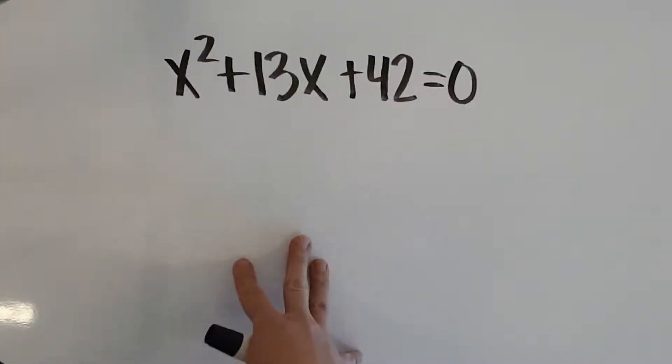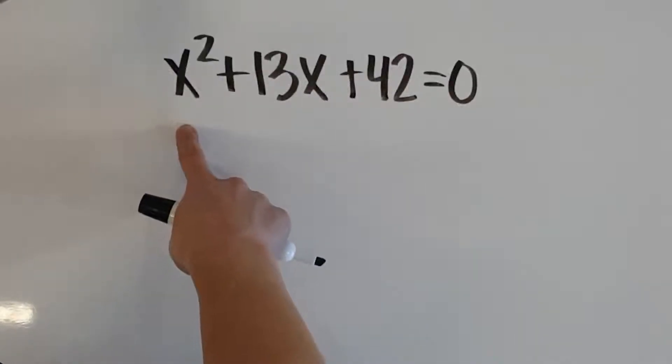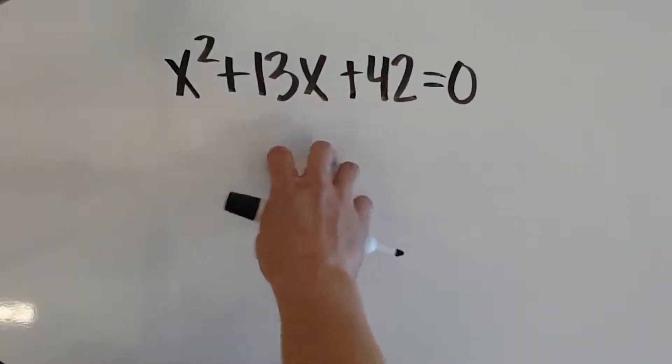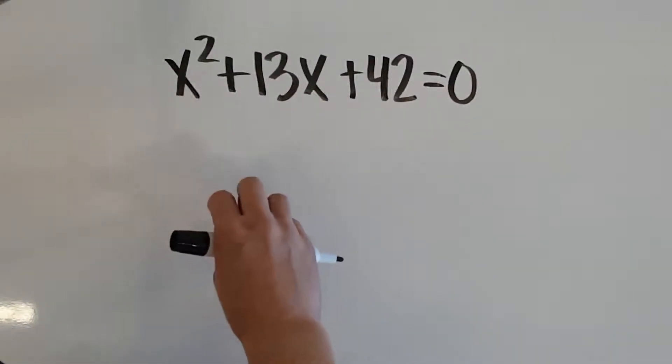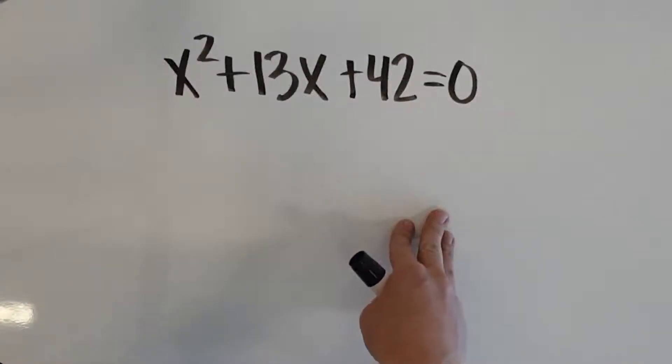So back in the day when we were solving linear equations, our goal would be to isolate x. Well, we can't exactly do that anymore because we have an x squared term and an x term that can't be combined. So either way, if I try to get x alone, I'm still going to have another x that I have to deal with. So we have to use other methods. And in this video, we're going to talk specifically about factoring.